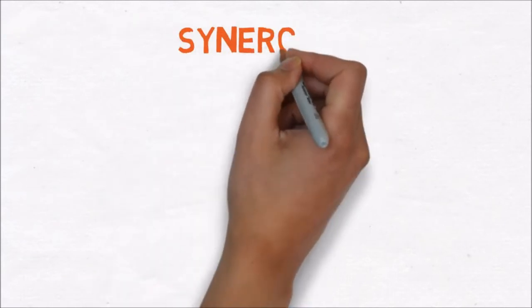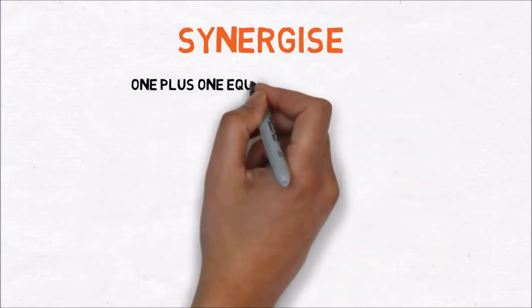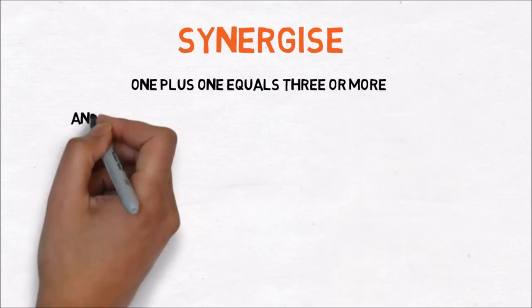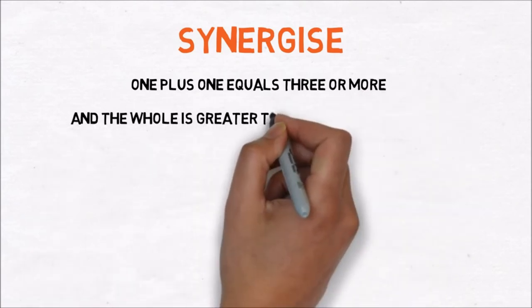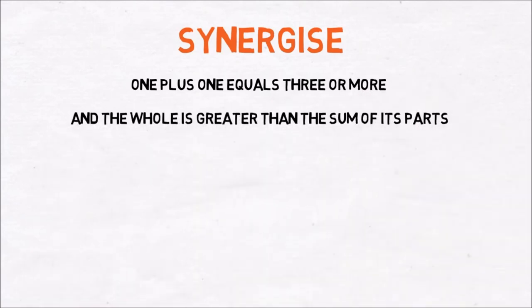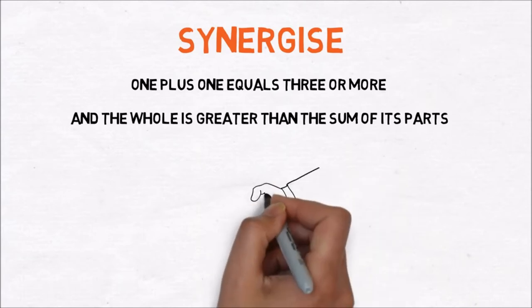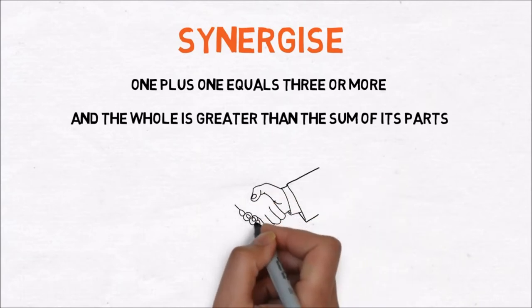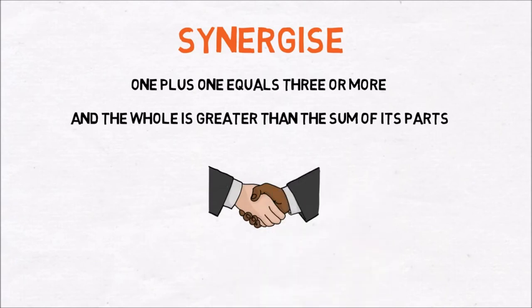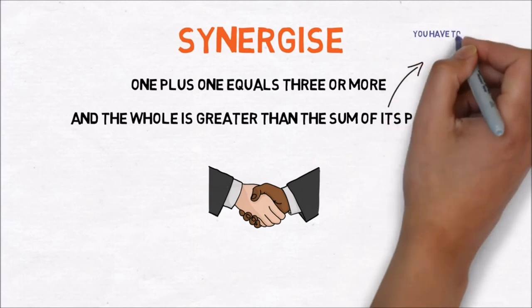The sixth lesson is to synergize. Synergy means that 1 plus 1 equals 3 or more and the whole is greater than the sum of its parts. Synergy allows you to open new possibilities that are not possible alone. If you want to introduce synergy in a certain situation you first have to implement lesson 4 and 5 into your life.